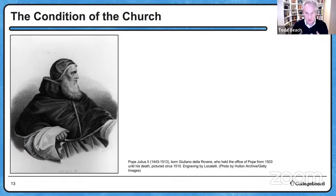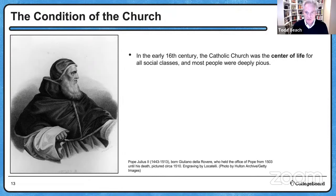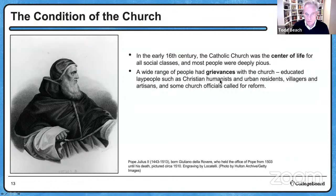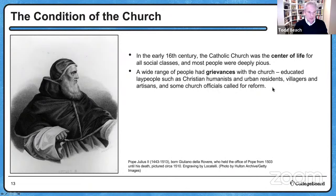As context for this period of reform, what was the church like heading into this? In the early 16th century, the Catholic Church was the center of life for all social classes throughout Europe. Most people were very deeply pious — deeply faithful, religiously regular — attending to religious study and doing things they felt would help them enter heaven. A wide range of people had grievances with the church, including educated lay people such as Christian humanists, urban residents, villagers, artisans, and some church officials who wanted some type of reform.